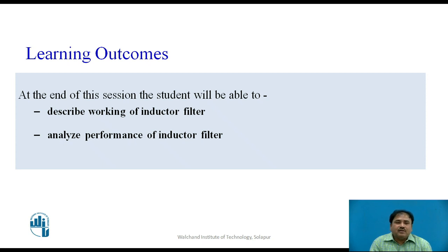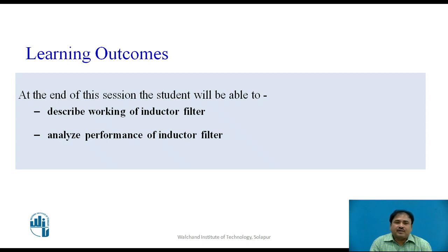We can develop a DC power supply in which the input is AC power supplied by the AC mains. So we have to first convert this AC power into DC power, and for this we normally use rectifiers. Rectifiers are of two types: one is half wave and the other is full wave. We prefer the full wave rectifier because it has less ripple. Ripple is the amount of AC voltage or AC component available in the output.